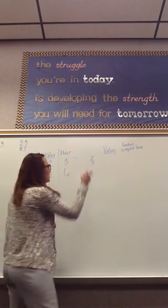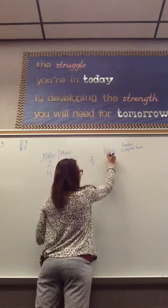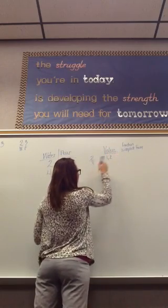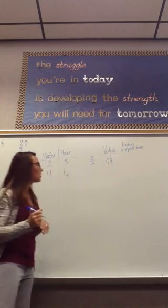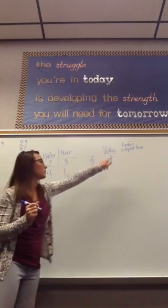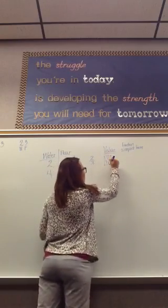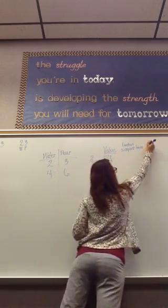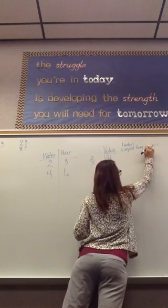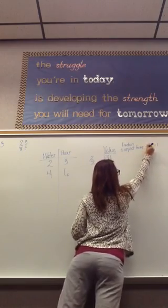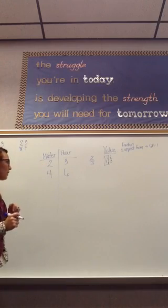To find out if a fraction is in simplest form, you need to list the factors. The factors of 2 are 1 and 2. The factors of 3 are 1 and 3. The greatest common factor for these two numbers is 1. When the greatest common factor is 1, you know it's in simplest form. So 2 thirds is the value of 2 to 3.